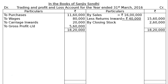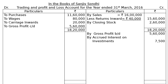Gross profit carried down is Rs. 5,60,000. This gross profit carried down is taken to the Profit and Loss Account credit side as gross profit brought down, Rs. 5,60,000. The other credit item is accrued interest on investment, given in adjustment part C — accrued interest on investment amounted to Rs. 7,500.